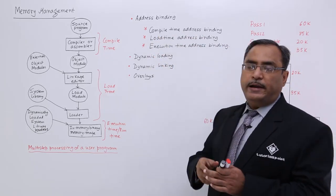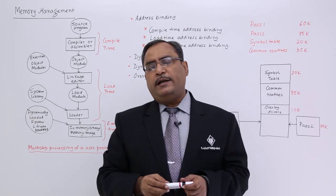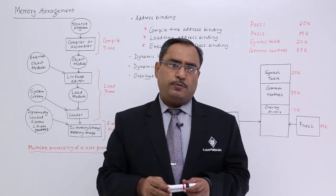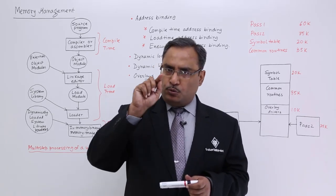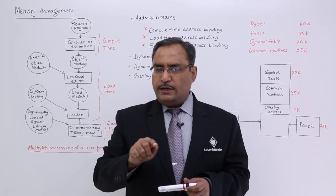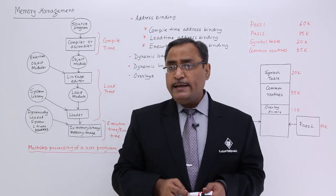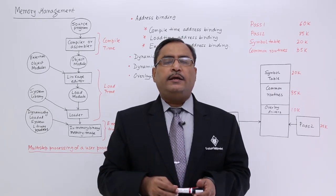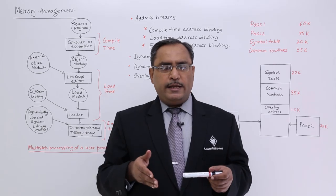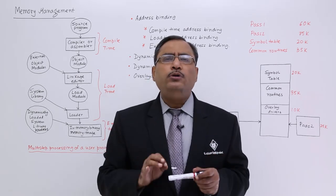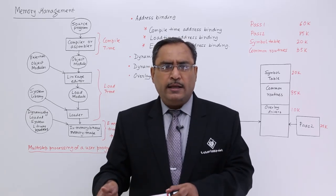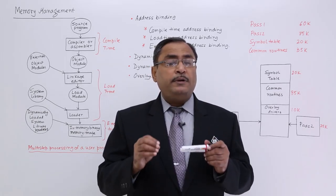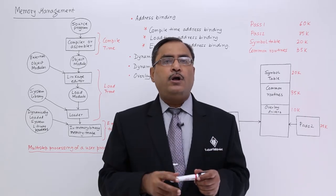In compile time address binding, during the compilation, the absolute address gets embedded in the executable code. That means the program knows from which address it is supposed to get loaded and from where it is supposed to get executed. The advantage here is that it will require minimum setup time — just like after entering my coach, I know exactly where I am going to sit, without asking anyone whether the seat is vacant or occupied.